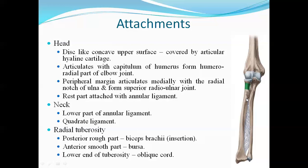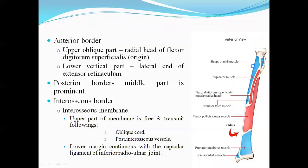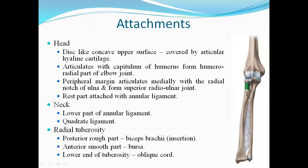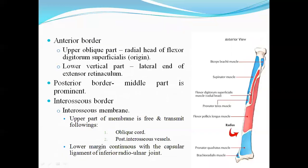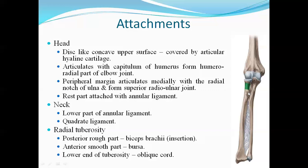At the radial tuberosity, the posterior rough part is the insertion of the biceps brachii muscle. The anterior smooth part is related to the bursa. Below this is the oblique line extending from the radial tuberosity.